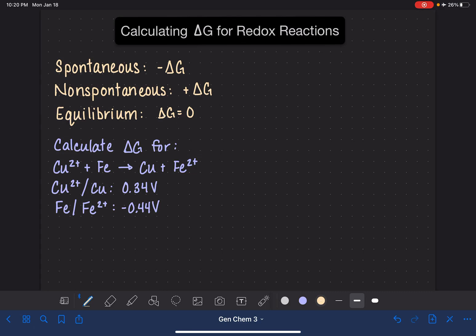We could also make these same types of generalizations about the value of E cell. For a spontaneous reaction, the value of E cell is always going to be a positive number. This means that the galvanic cell is producing electricity. For a non-spontaneous galvanic cell, the value of E cell is always going to be a negative number. This means that it requires energy. And when a galvanic cell is in equilibrium, the value of E cell is going to be equal to zero.